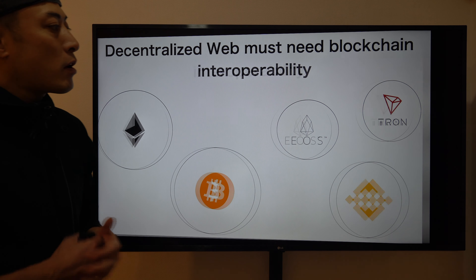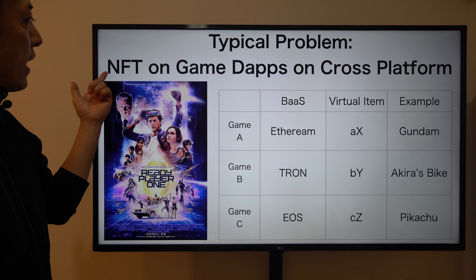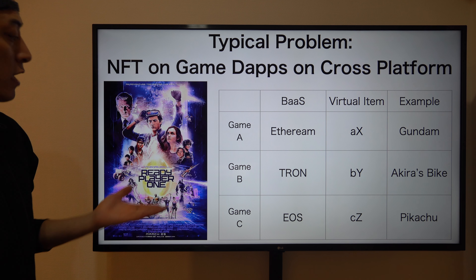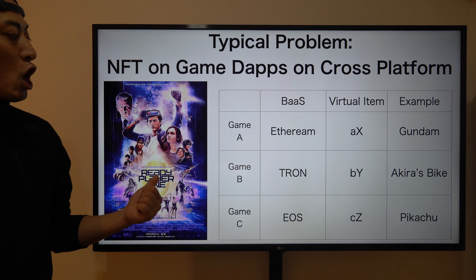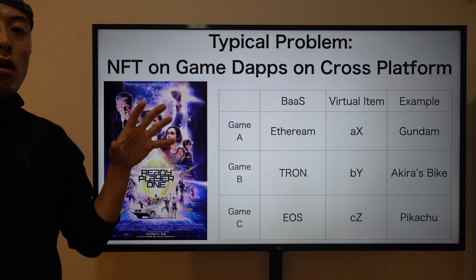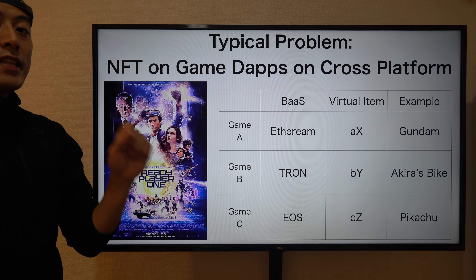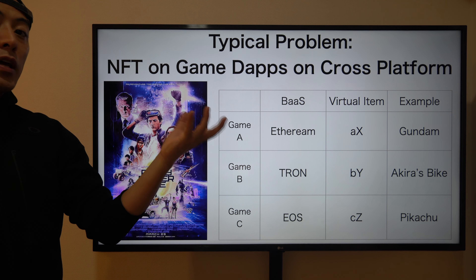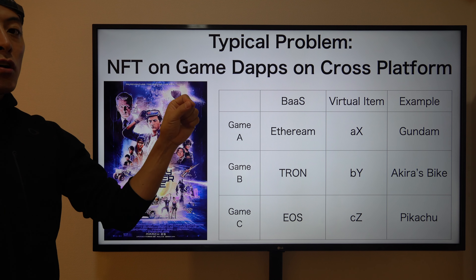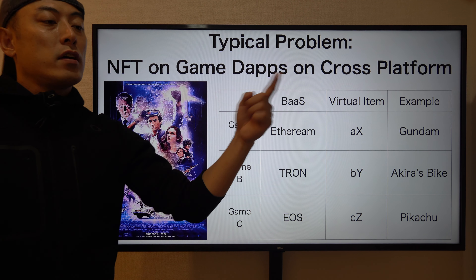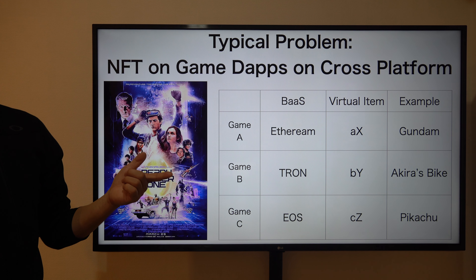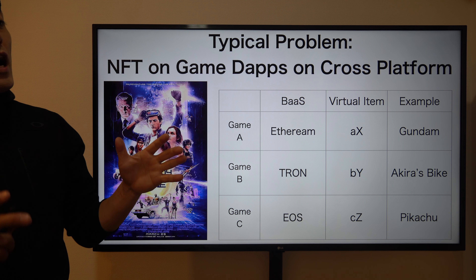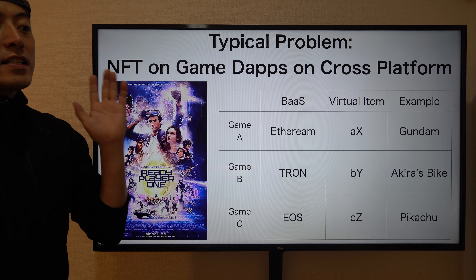One typical problem in the blockchain space is NFTs in game dApps on cross-platform. Think about the movie Ready Player One — inside there we have a variety of game zones just like a universe. Each player with a favorite character can carry those characters and travel around different game zones. When you apply these concepts to the blockchain world, it's currently technically impossible.